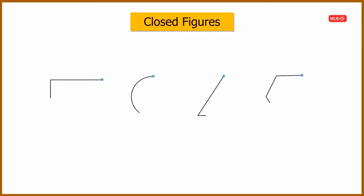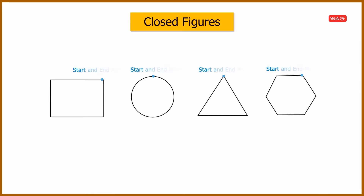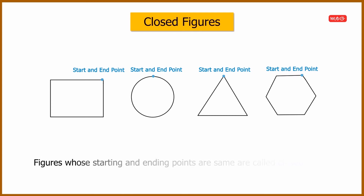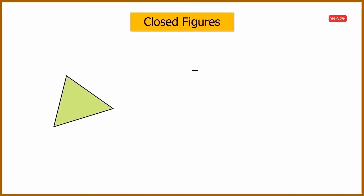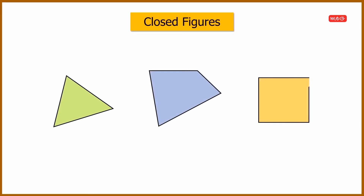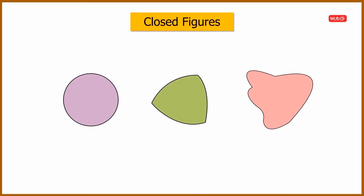Look at these figures — in all the figures, the starting and end points are the same. Such figures are called closed figures. A closed figure can be made up of all straight lines, or all curved lines, or it can have a combination of both straight and curved lines.